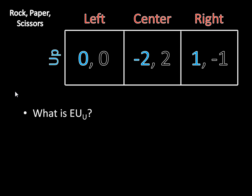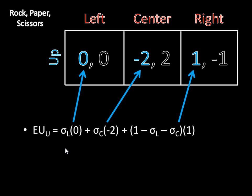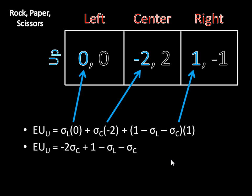Let's start with up. What is player one's expected utility for up? With probability sigma-left, player one will get zero. With probability sigma-center, he'll get negative two. And with remaining probability one minus sigma-left minus sigma-center, player one will get one. The zero, negative two, and one are just the payoff numbers from the game matrix applied appropriately. After simplifying, the expected utility for up equals one minus sigma-left minus three times sigma-center.